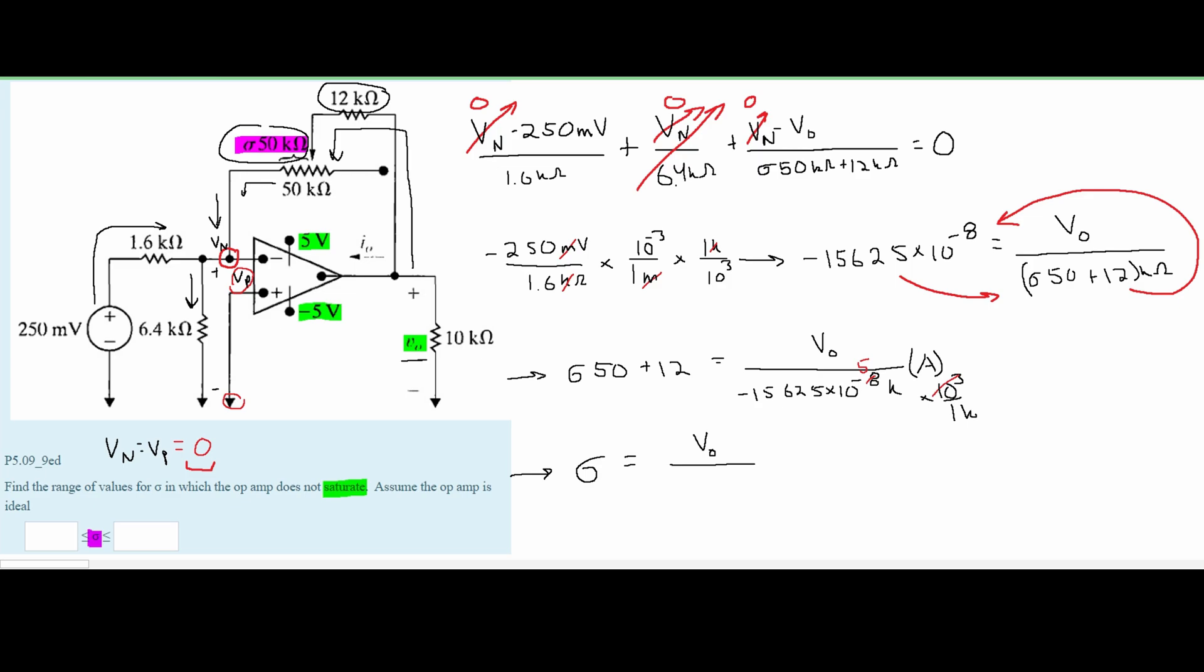We can subtract 12 from both sides, put everything in parentheses, and then divide it by the 50. Now we know that our V0 at saturation is going to be either 5 volts or negative 5 volts.